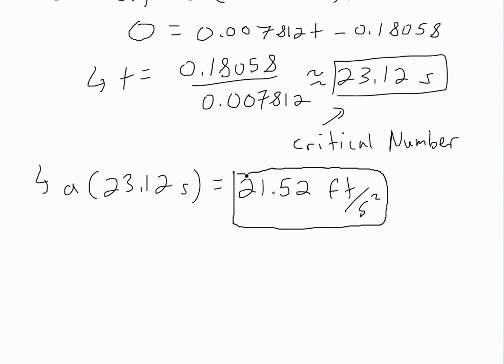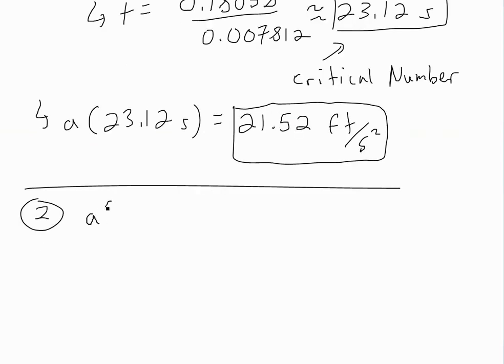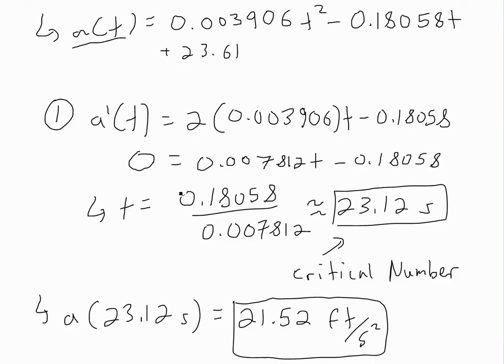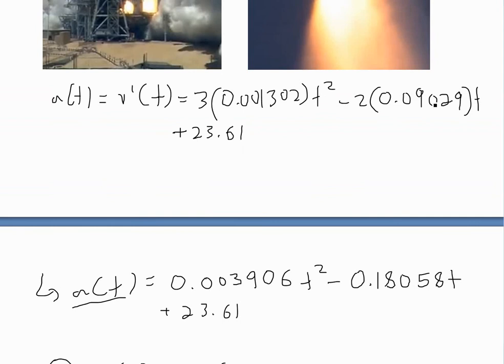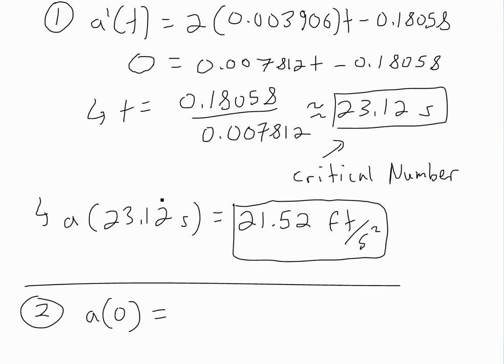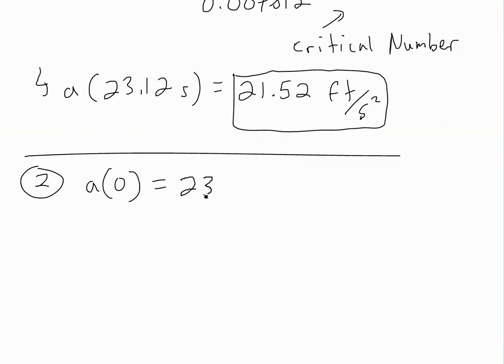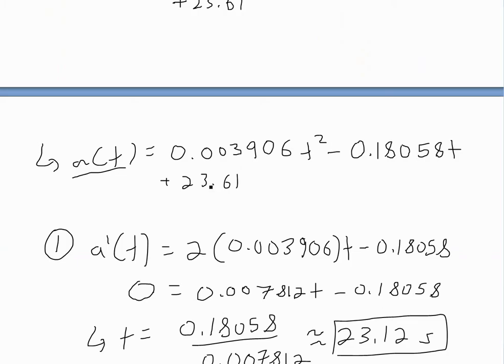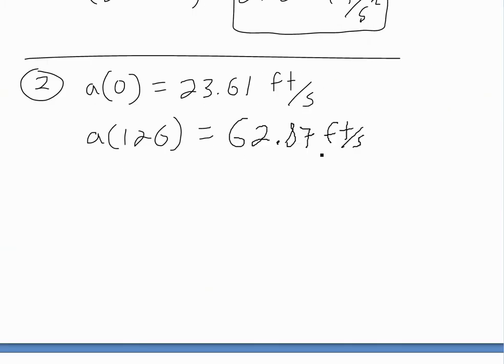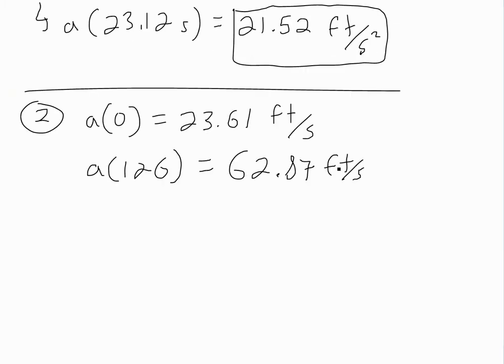Now we have to do step two, which is find the endpoints. The endpoints: at liftoff t = 0, so plug this into the function—the t becomes zero—we're just left with 23.61 feet per second squared. And now the last one: a(126) equals, plug that into here using the calculator, you're going to get about 62.87 feet per second squared. Now the final step, step three, we just compare the values.